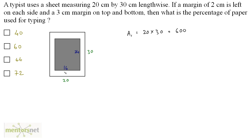Now let's calculate the area of the printing surface. Let it be A2. It is equal to 16 times 24, and that is 384 cm square.